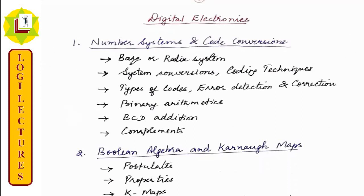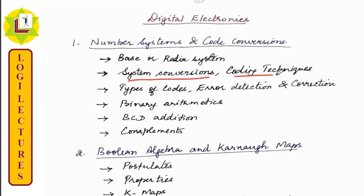So, number system. First thing I'll talk about is different bases of systems. This is the coding technique for one system. These are one-mark portions. Types of codes, error detection and correction. Again, these are one-mark portions.